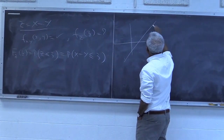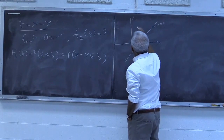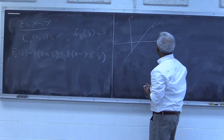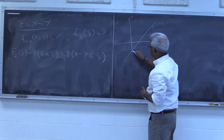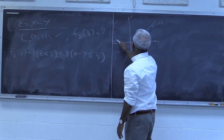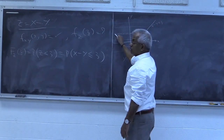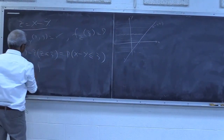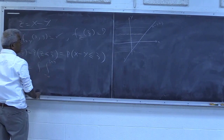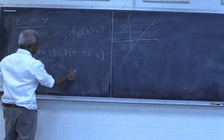We need to draw the line x minus y = z. When y is 0, x is z; when x is 0, y is minus z. So the intercepts are z and minus z, and it's a line at 45 degrees. The region x minus y less than z is to the left of this line. We integrate along a strip on the x-axis: x goes from minus infinity to z plus y, and y goes from minus infinity to plus infinity of f(x,y) dx dy.